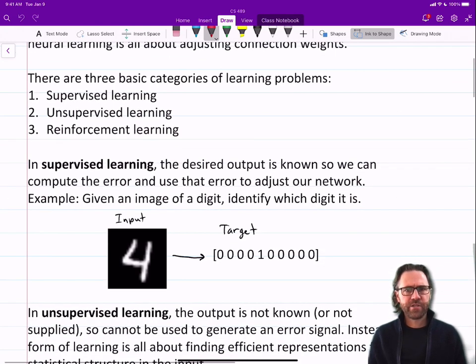So first of all, in supervised learning, the desired output is known. So we compute the error and use that error to adjust our network. We have our output, and we look at what our desired output was, and we take the error and use that to tweak our neural network.